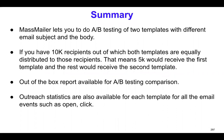To summarize how the A/B testing feature works — you may have seen this in other email service providers or email software — if you want to find out which template is actually going to work better for you, you could basically do a test for a sample recipient list and see which one is performing better, and then decide which one you want to send out to the real people. It works the same way in MassMailer, but with a little bit more difference.